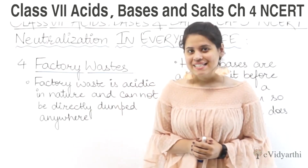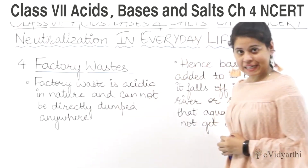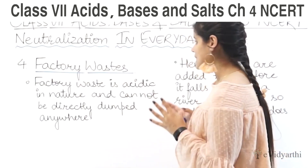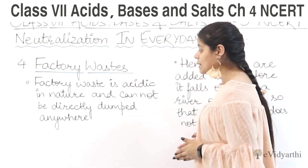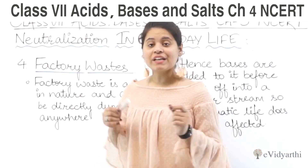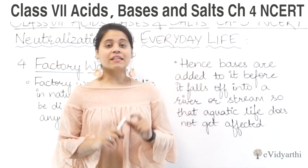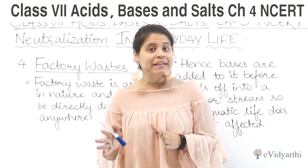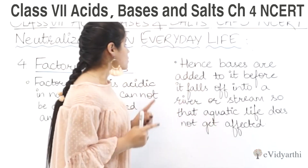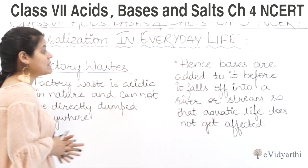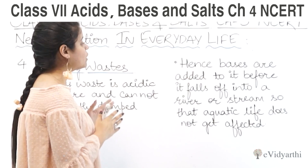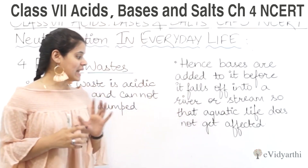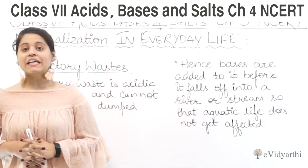The last example is factory waste. Factory waste is acidic in nature and cannot be directly dumped anywhere. Hence, bases are added to it before it flows into a river or stream so that aquatic life does not get affected.